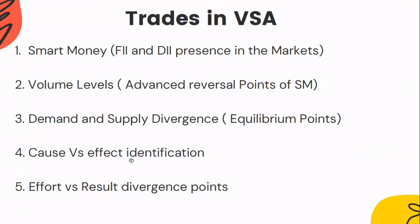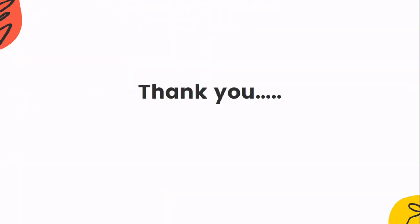Based on these five points — smart money presence, volume levels, demand and supply divergence, cause versus effect identification, and effort versus result divergence — we take trades in VSA. Upcoming videos will feature live market analysis and swing trading based on these five topics. This is the end of the basic series. All additional content on signal of strength, signal of weakness, Wyckoff schematic, and accumulation/distribution zones is covered in the webinars. Thank you, and we'll see you in the next videos.